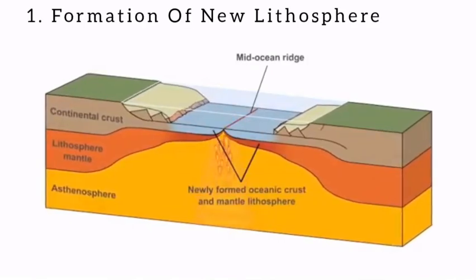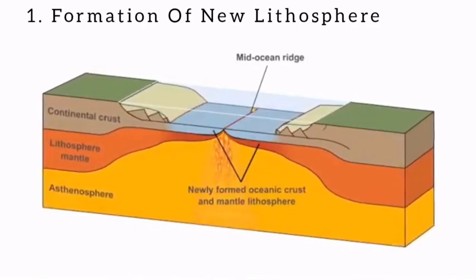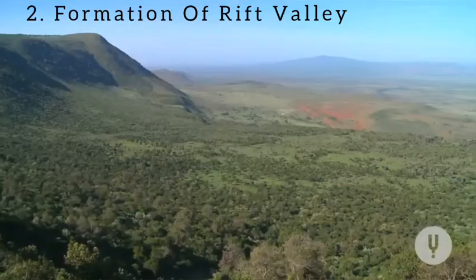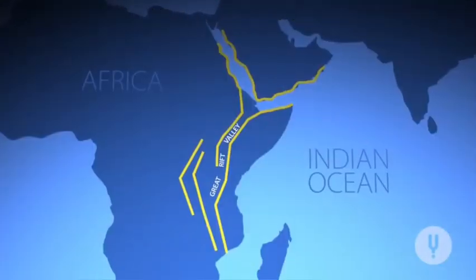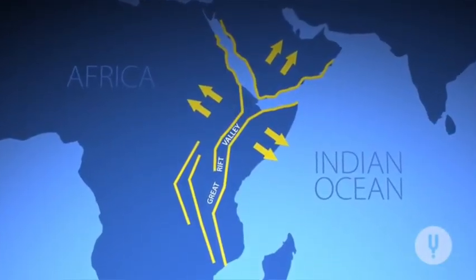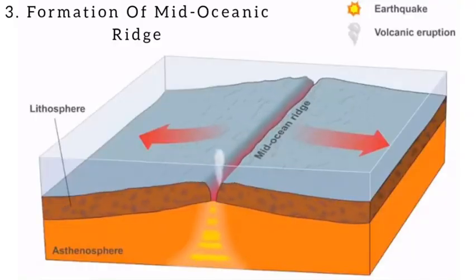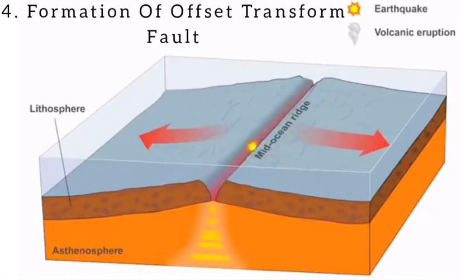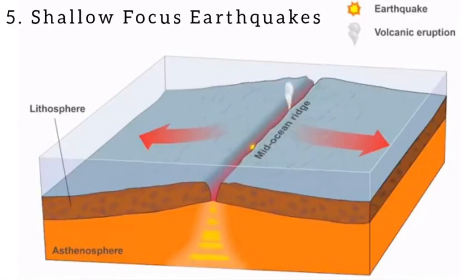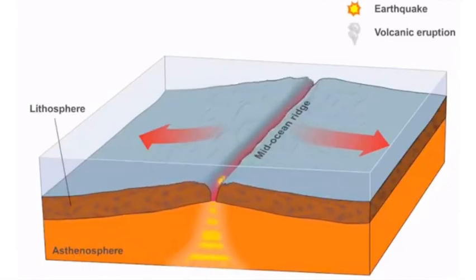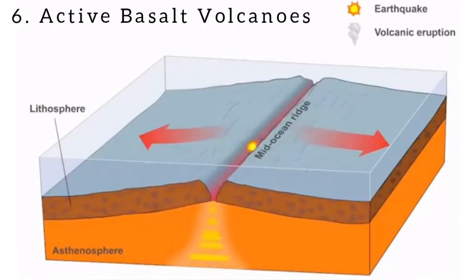The characteristic features of the divergent plate zone are: first, formation of new lithosphere; second, formation of rift valleys — for example, the Great East African Rift Valley; third, formation of submarine long-route mountain ranges, also called mid-oceanic ridges; and fourth, formation of offset transform faults.